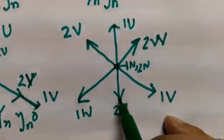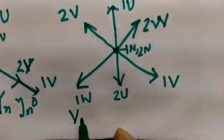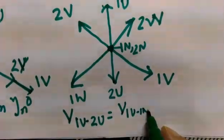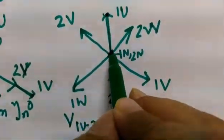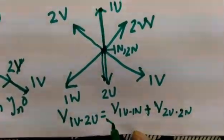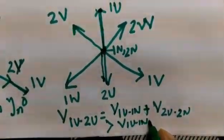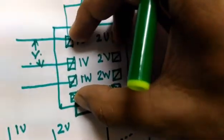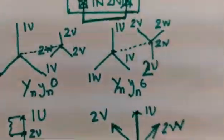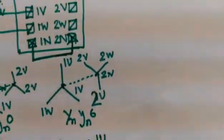So if the potential difference between 1U–2U, 1V–2V, and 1W–2W is less than the high voltage winding's phase voltage, then the vector group is YnYn0. For YnYn6, V(1U–2U) equals V(1U–1N) plus V(2U–2N), which is greater than V(1U–1N). So if the voltmeter gives a voltage rating higher than the phase voltage, the vector group is star-star 6; if lower, it is star-star 0.